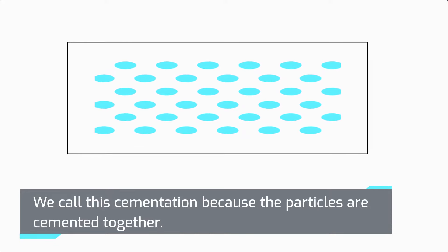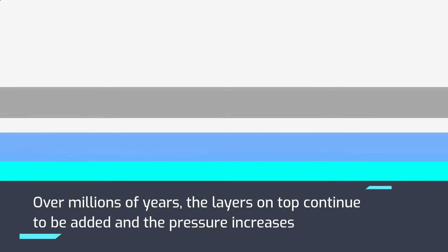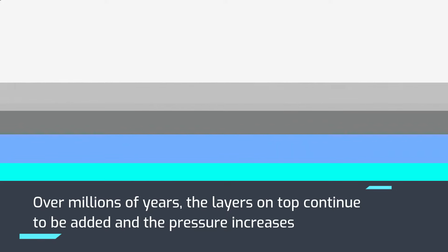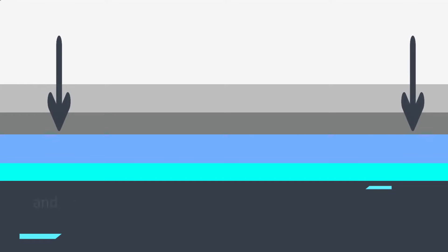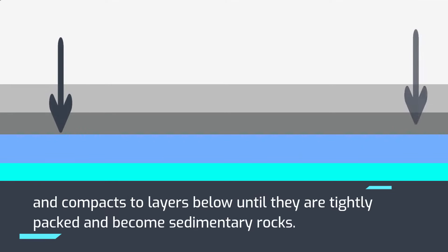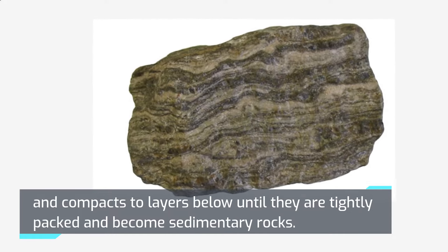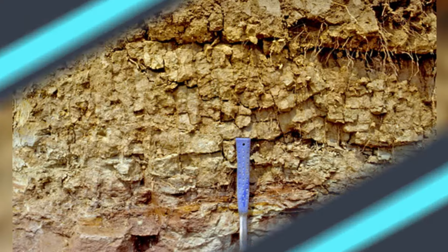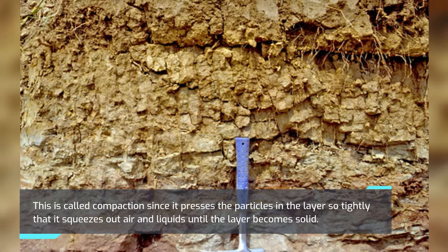Because the particles are cemented together, over millions of years the layers on top continue to be added and the pressure increases and compacts the layers below until they are tightly packed and become sedimentary rocks. This is called compaction.